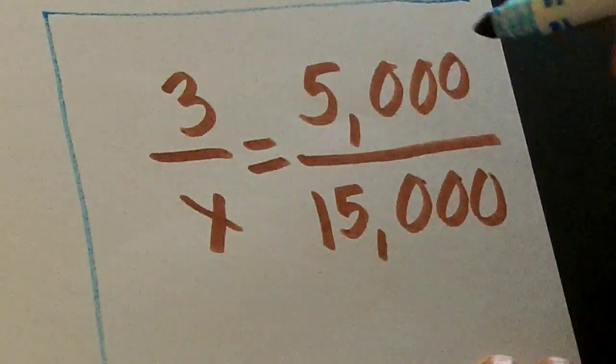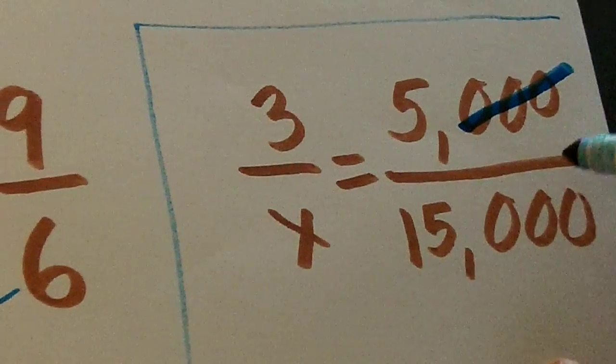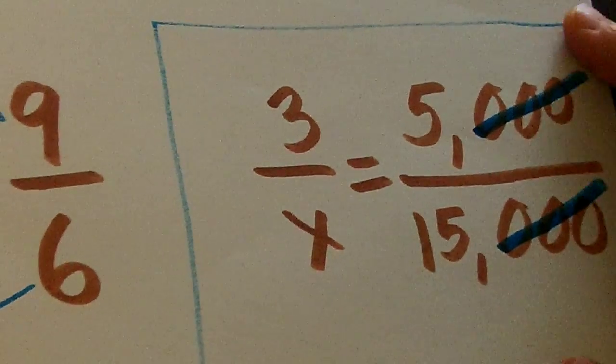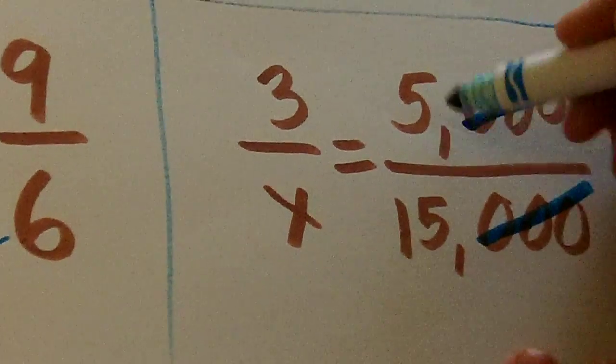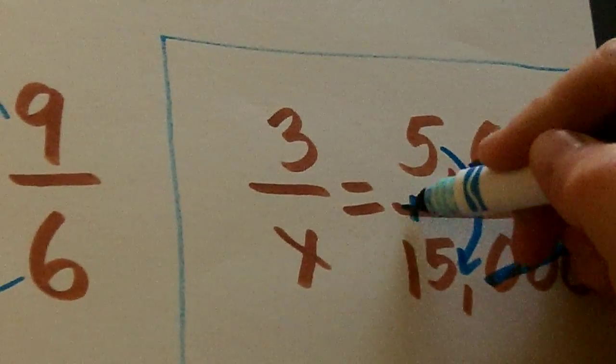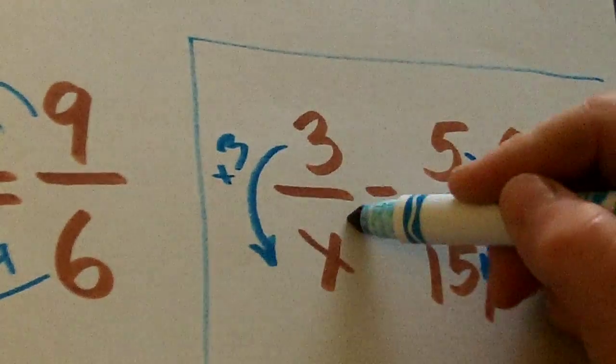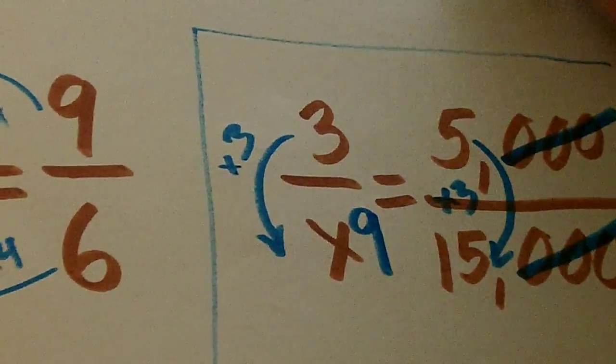Now this last one will be 2 steps. We can simply cancel out those zeros. So now we have 5. How does 5 become 15? Times 3. What's 3 times 3? 9.